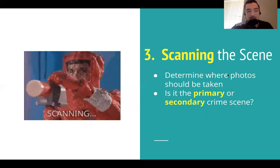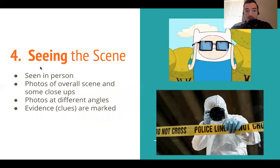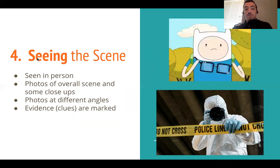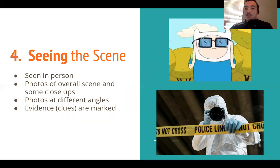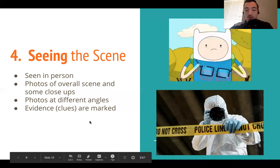The next couple of steps are done by the CSI — crime scene investigation unit. Seeing the crime scene: first you're scanning, then you're really seeing it in person. You're taking a bunch of photos — overall photos and close-up photos — capturing any evidence you can find at different angles. All the evidence clues are marked. We'll jump into how they mark it at a later lesson.